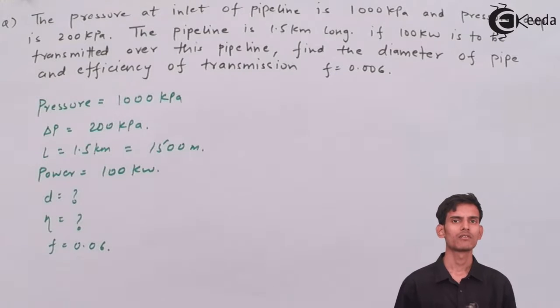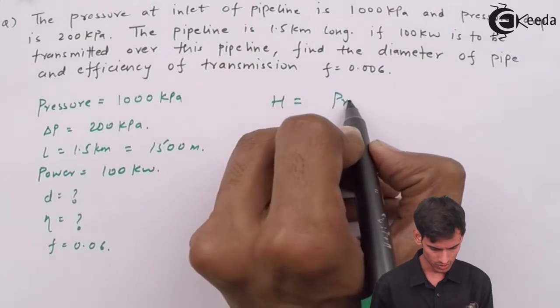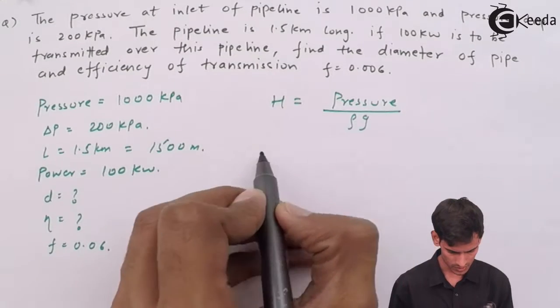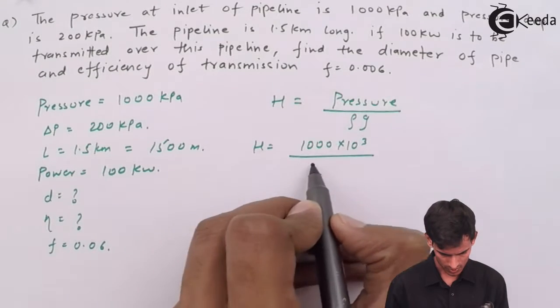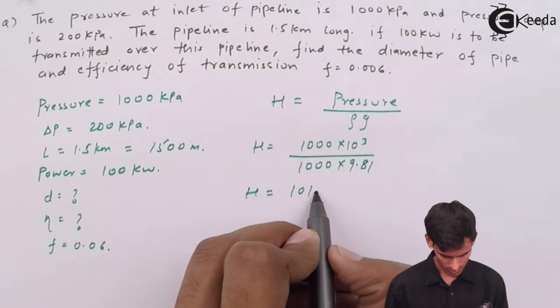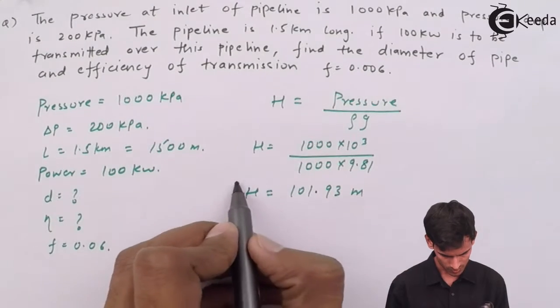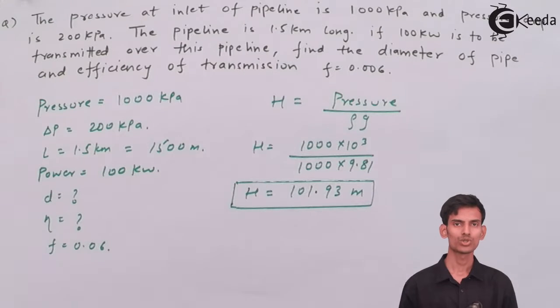Before you go on to calculating power, you should know the head. Here, the head is not directly given. Instead of head, the pressure is given. So if you know the pressure, you can get the value of head. It's very simple. Pressure is rho g h, so h is p upon rho g. So you can get the value of head here. This is the head at the inlet. This is the pressure at inlet. Once you divide the pressure with rho g, you get the head at the inlet of the pipe.